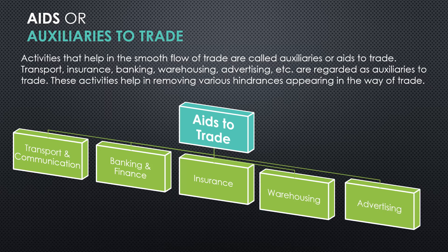The last aid is advertising. It is practically impossible for manufacturers and traders to contact each and every customer individually, so advertisement fulfills this purpose. Advertisement informs people about different products, their utility, range, and uses. If consumers like the product, they can approach traders dealing in similar products and go buy them. This is how the problem of sending information to consumers is taken care of by the aid called advertising.